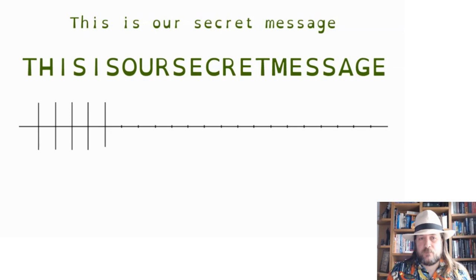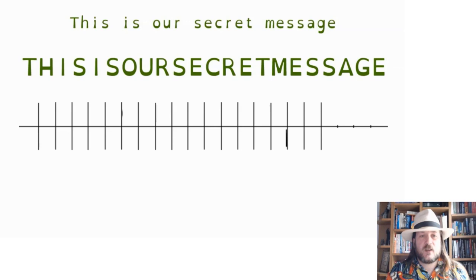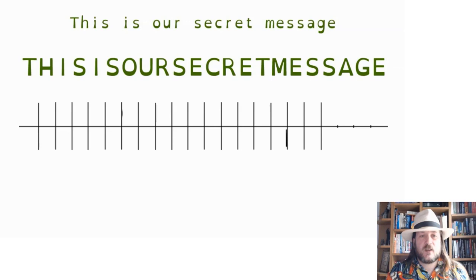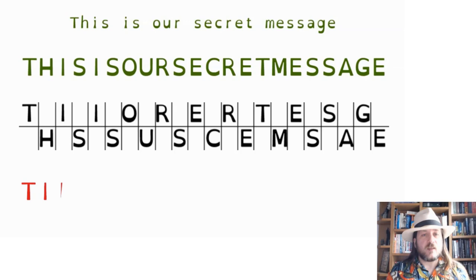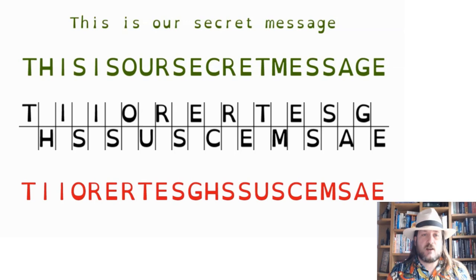Now we draw our grid. After we have our grid, we write out the message again, alternating between the top and bottom row. So our first letter T goes on the top row, H on the bottom row, I on the top row, S on the bottom row, and so on until we've written the whole message. Finally, we take the two rows and combine them together so our secret message comes out scrambled. This message has become very difficult to understand — and it was quite hard to say for me too.